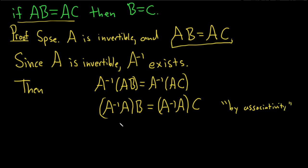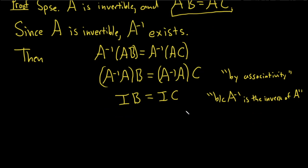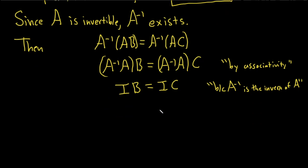And A inverse times A is the identity matrix. Same thing here, it's the identity matrix. So this is because A inverse is the inverse of A. That's what it means to be the inverse. When you multiply it by A, you get the identity matrix.